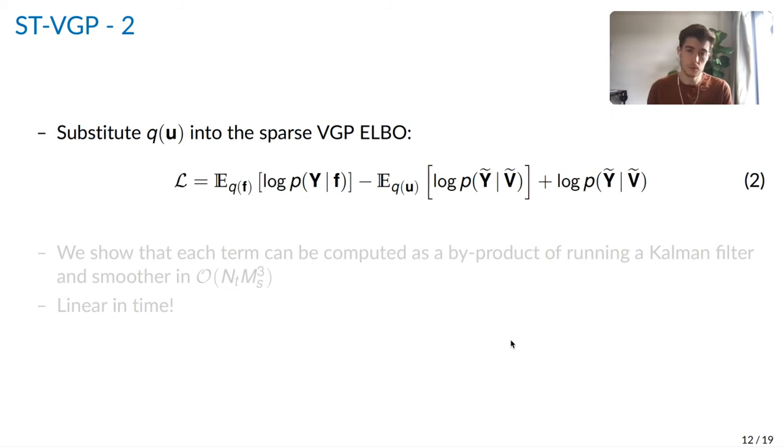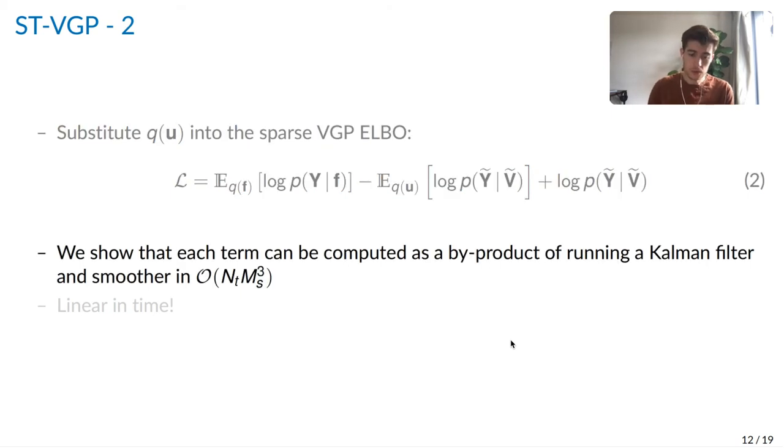So to utilize the state-space form of q of u, we substitute this back into the SVGP ELBO, resulting in equation two. And we then show that each term of this ELBO can be computed as a byproduct of running the Kalman filter and smoother to compute q of u in a state-space form.